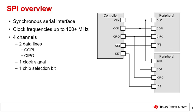SPI devices are push-pull drivers rather than open-drain, so no external pull-up resistors are needed on I/O lines. SPI is not defined by a formal standard, so protocol options may vary by application and devices used. Clock frequencies and data speeds may vary up to 75 to 100 MHz. Typically the SPI bus contains four channels. Please note that in the terminology used in this video, 'controller' replaces 'master' and 'peripheral' replaces 'slave'.